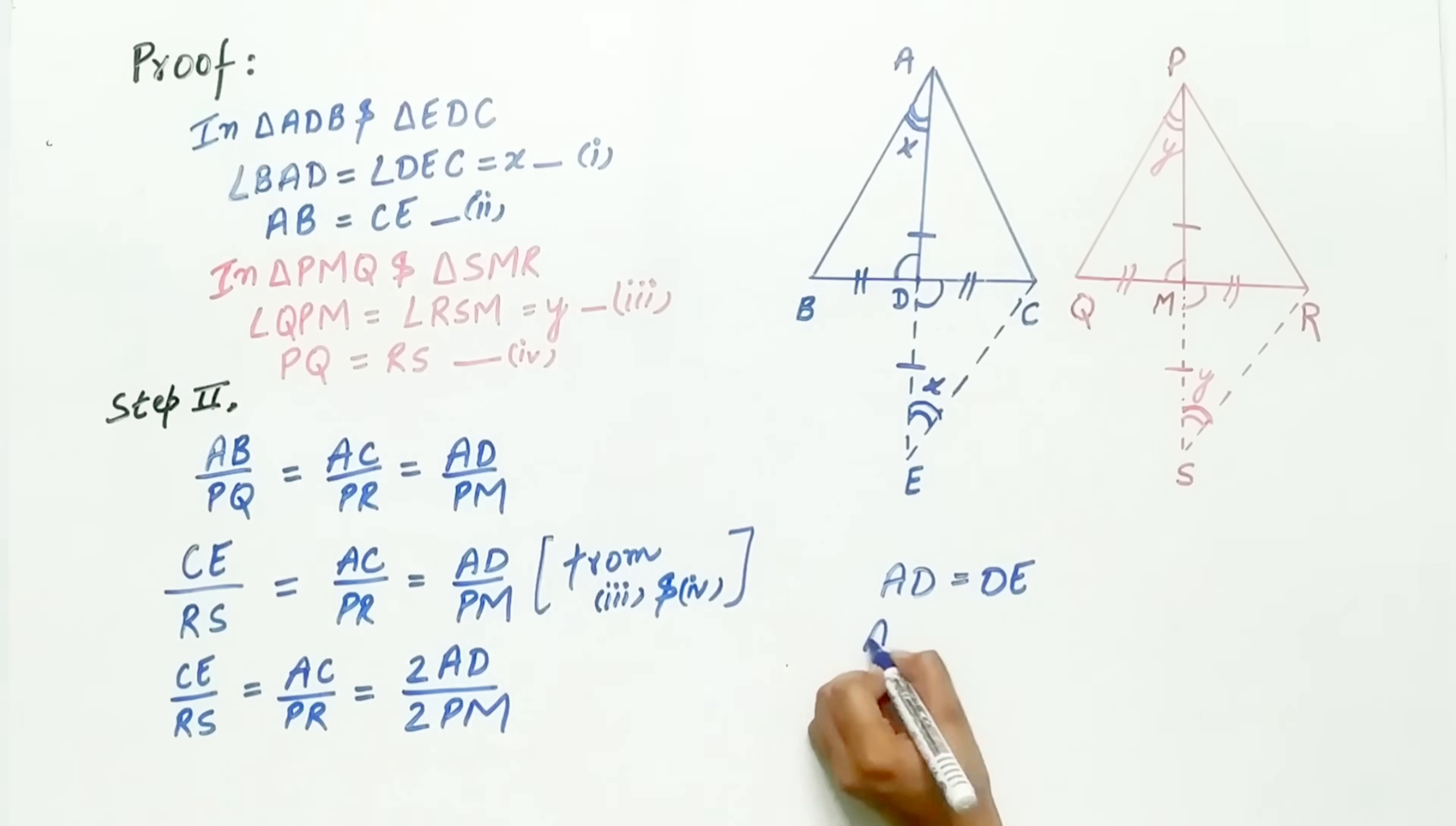Hence, AD plus DE is equal to AE. Since DE is equal to AD, substitute AD in place of DE. So, twice of AD is equal to AE. Similarly,